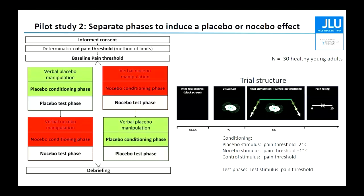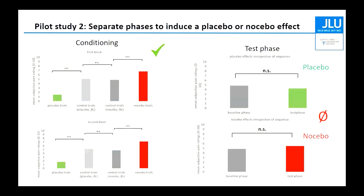We used the same stimulus intensities as before: placebo stimulus at pain threshold minus two degrees, nocebo at pain threshold plus one degree, and control stimulus at pain threshold — meaning the wristband was turned off. Again, almost picture perfect — even in the baseline the intensity was the same — and conditioning in the placebo trials in both the first and second block also showed a placebo effect. When we looked at the test phase, not really what we would expect.